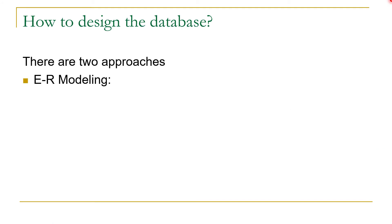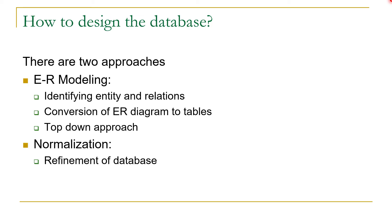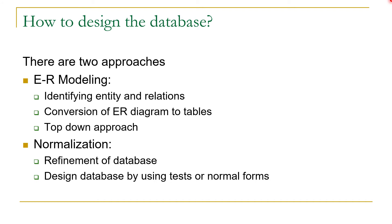In order to design a database we have two approaches. The first approach is ER modeling, where we identify entities and relationships from the requirements and then convert these ER diagrams to tables. Since we start from the requirements, ER modeling is considered a top-down approach. The other approach is normalization, which is considered a process for refinement of the database, and this approach is considered a bottom-up approach.